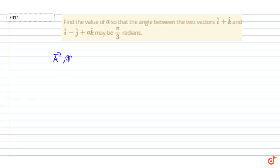We know that the angle between two vectors, vector A and vector B, is given by cos θ equals vector A dot vector B upon modulus of vector A into modulus of vector B. Here it is given that vector A equals i plus k.